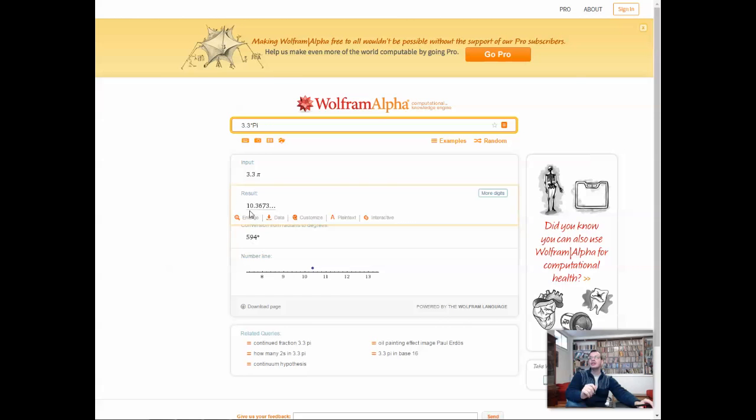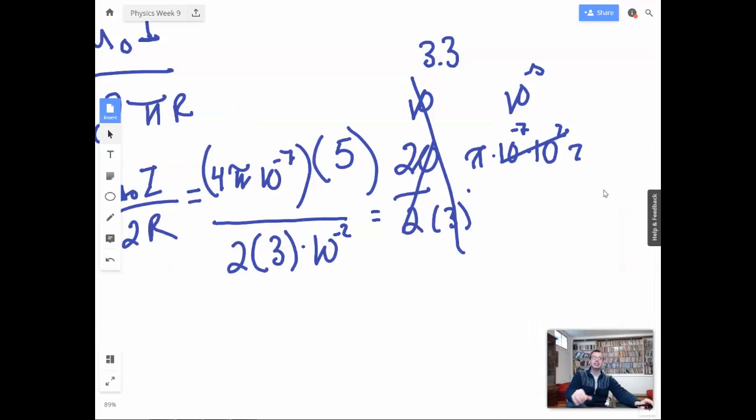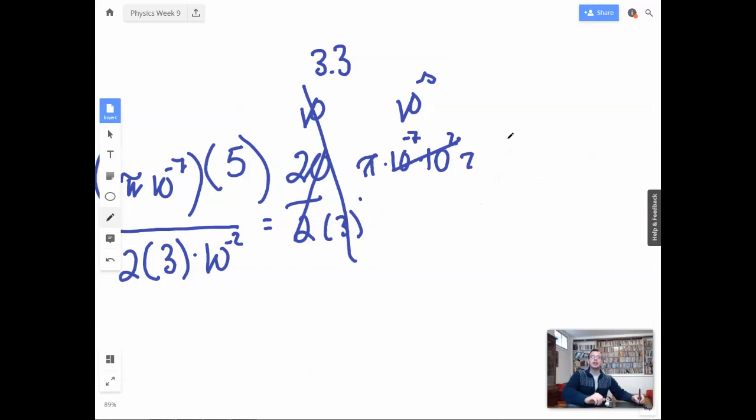We're gonna have 10 point, I'm gonna say 10.4. So we're gonna have 10.4, and then this is 10 times 10 to the 5th, negative 5th.